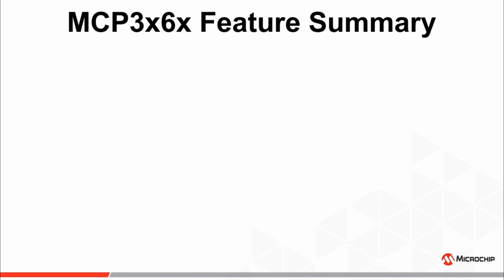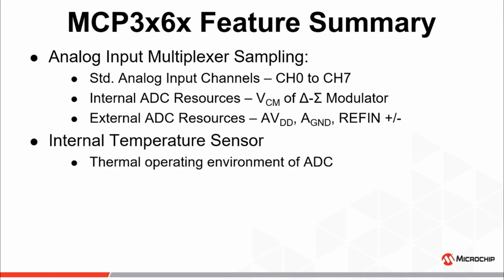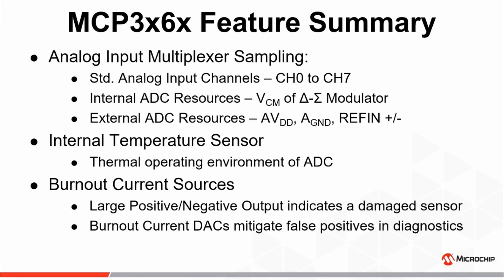Now let's take a moment to recap what we've covered thus far. First, we discussed the input multiplexer and how it can be configured to measure various analog input channels, including not only standard analog inputs, but also various internal and external ADC resources for the purpose of diagnostic testing. Secondly, we discussed the internal temperature sensor of the device and how it can be used to determine the thermal operating environment surrounding the ADC. And finally, we discussed the burnout current sources and how they can be used to determine the current state of the sensor circuit and whether it can be used to collect reliable data. In summary, by utilizing these diagnostic features, both internal and external resources of the ADC can be monitored, which is essential for detecting potential issues or changes in an operating environment that can lead to hazardous conditions in safety-critical applications, as well as determining when it may be necessary to perform preventative maintenance.